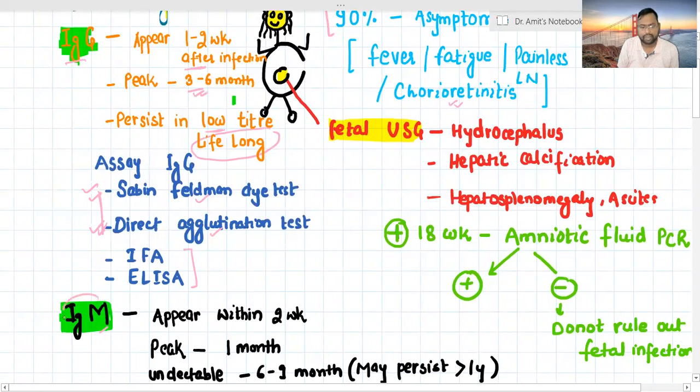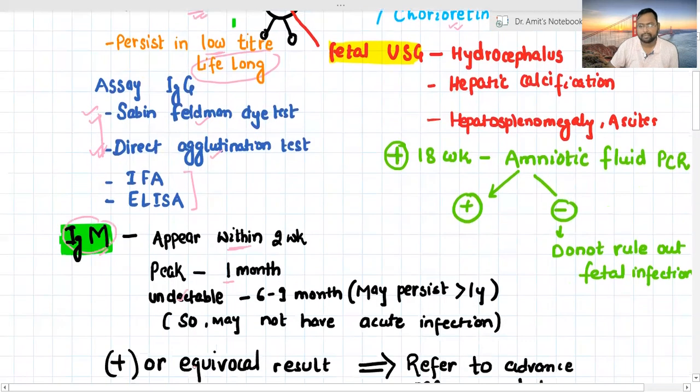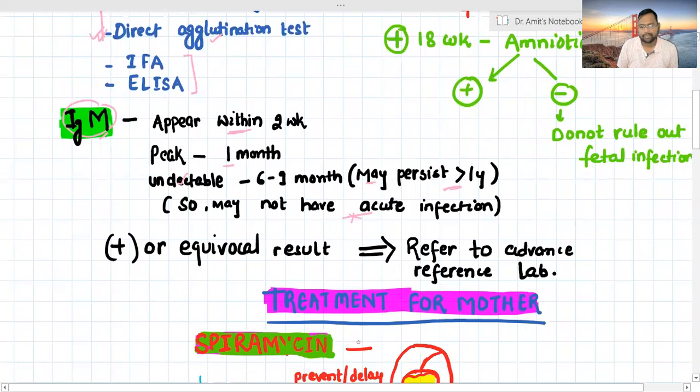Now we have IgM. It appears within two weeks, peaks around one month, and is undetectable after six to nine months. It may persist for more than one year in some cases. If you get IgM positive, we consider it acute infection, but sometimes it may persist longer. If you get positive or equivocal result IgM, you have to refer to advanced reference laboratory because you may get false positive test also.